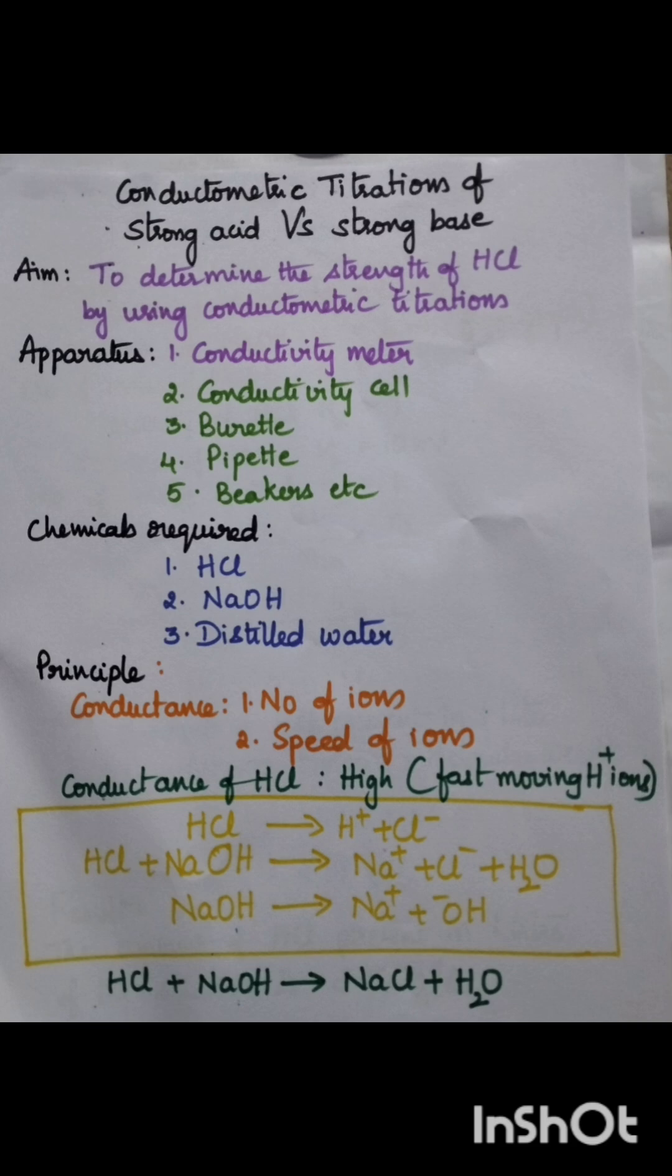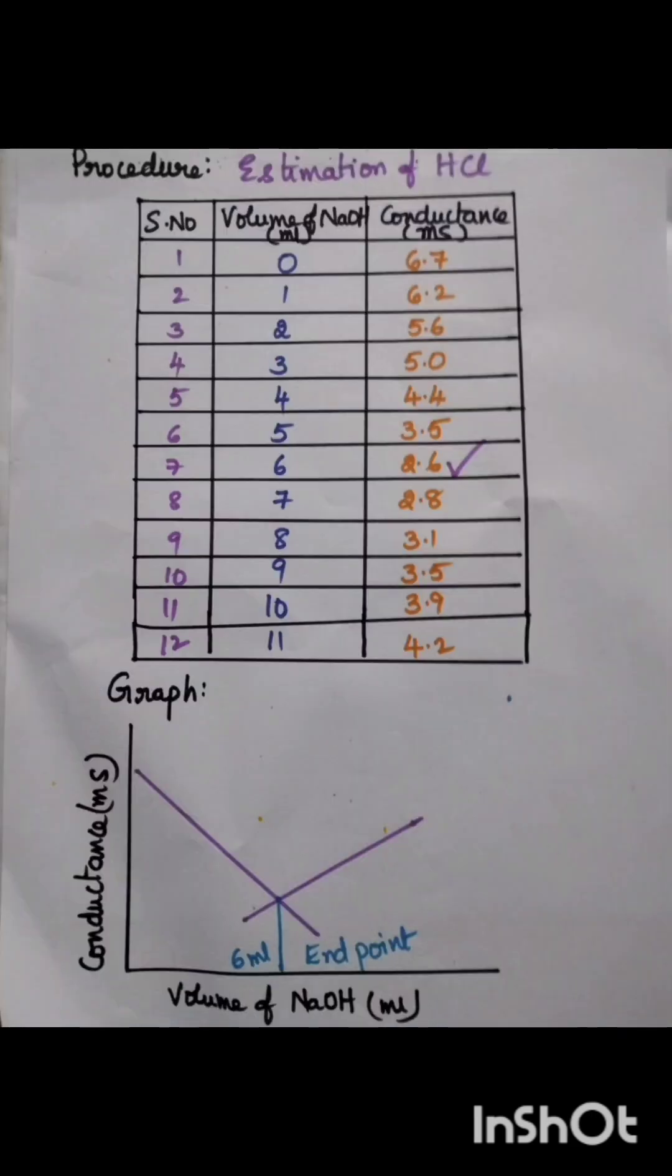Coming to the simple procedure, it involves the estimation of HCl. Here, 10 ml of HCl is taken into a beaker and its conductance is measured. Each time 1 ml of NaOH is added and its conductance is measured.